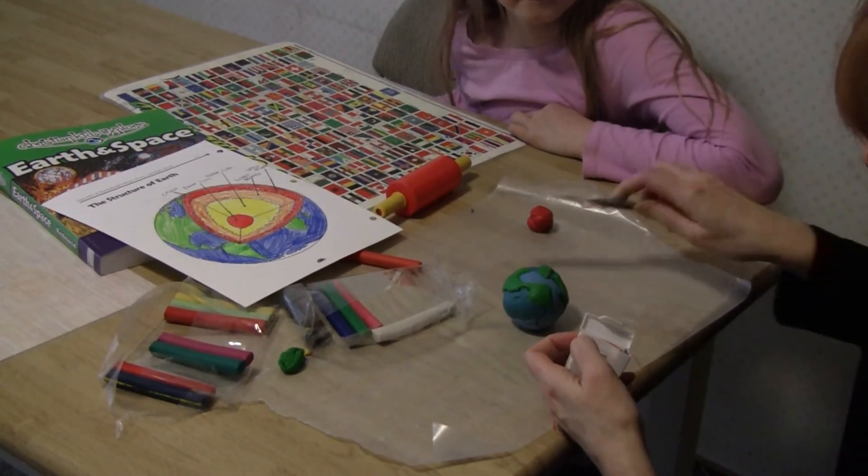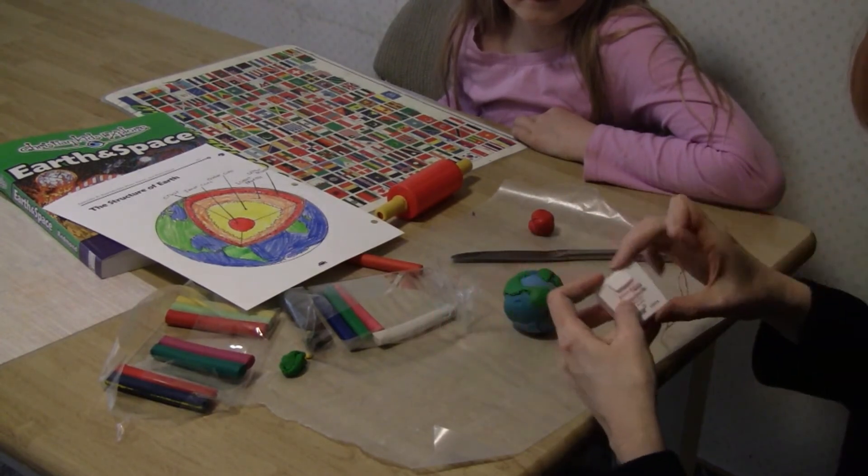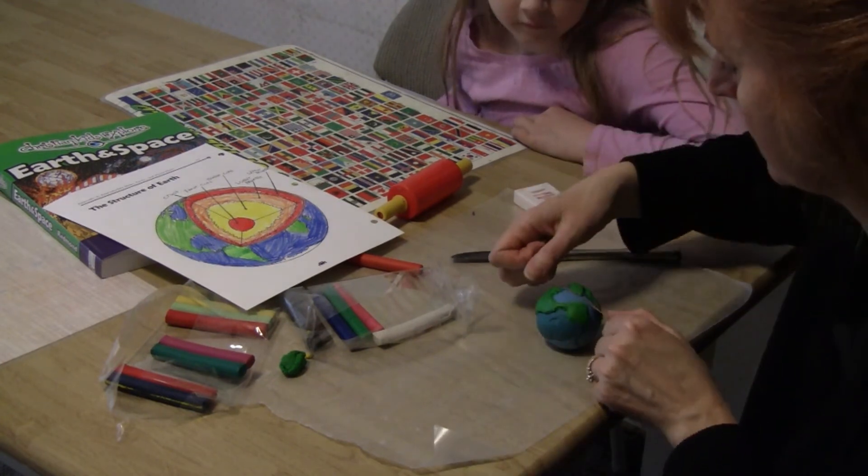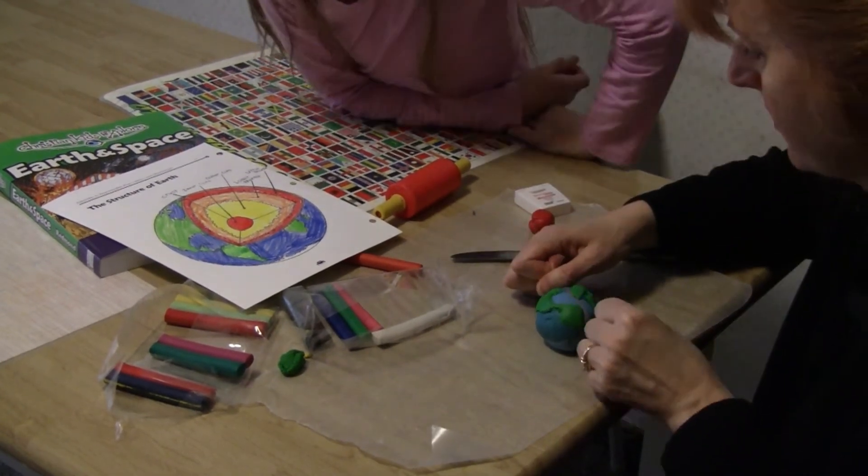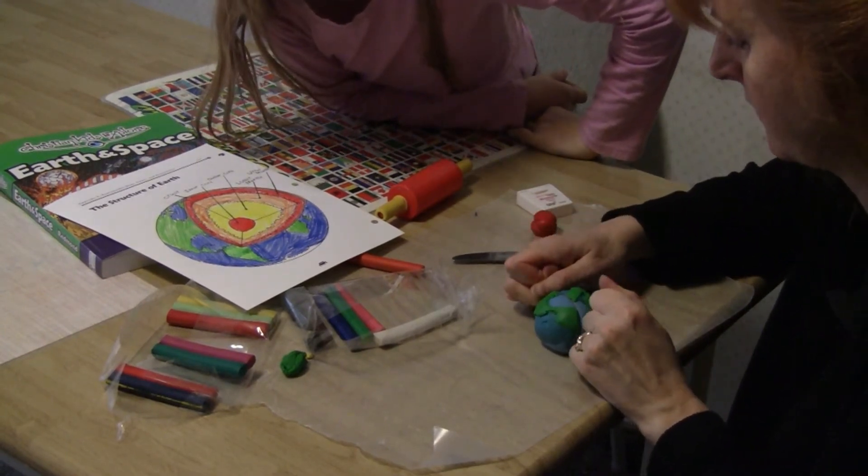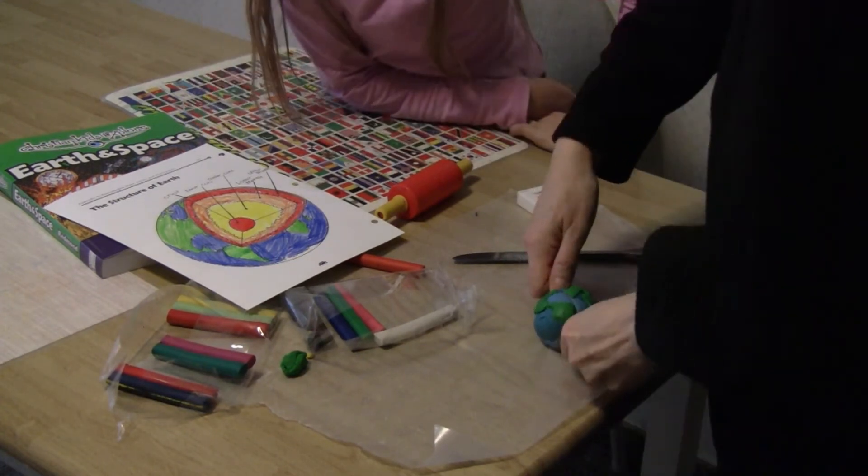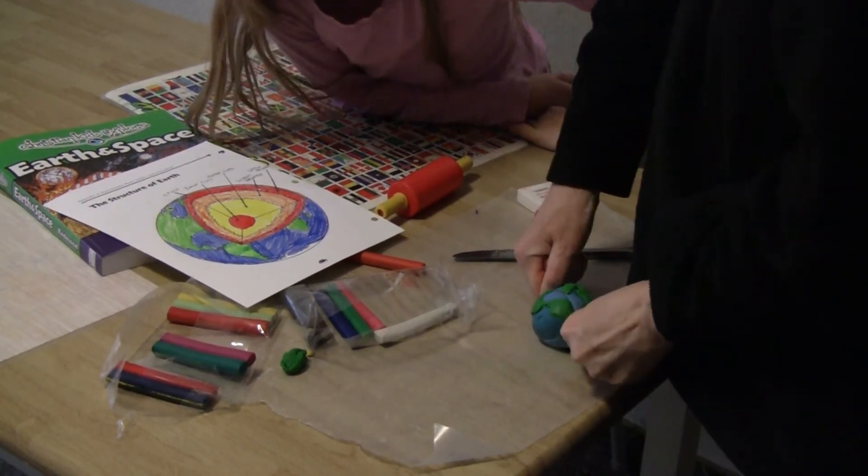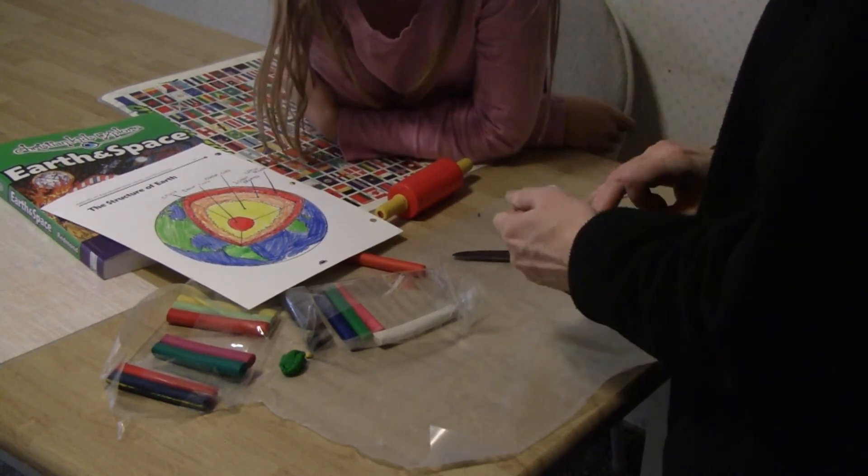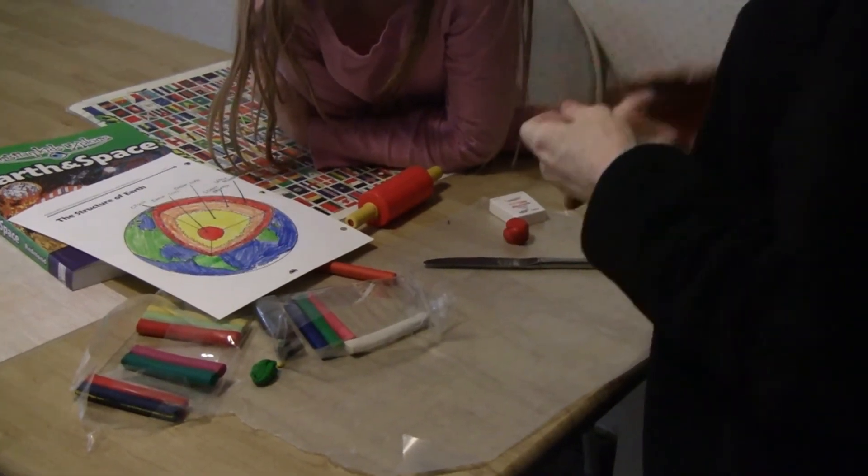So now we are going to, if you want to cut it with a knife, you can. We're going to cut it with dental floss like the instructions say to get a smoother cut all the way through. So dental floss is kind of hard to use. So it looks like you need to stand up at the top and then push it down all the way through it.